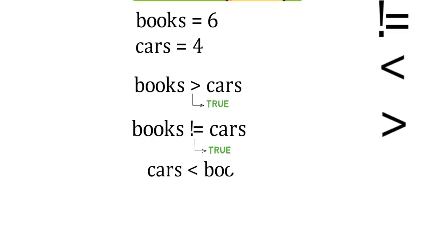Cars is less than books would again return true. In this example we switched them, so cars, the smaller number, is first. Books is equal to cars. This would return false, because they are not equal in value to each other.